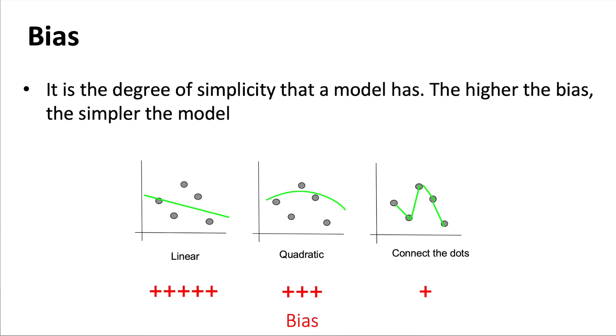So what is bias? The concept of bias is related to the degree of simplicity that a model has. The higher the bias, the simpler the model. So here we can see that the linear model has the biggest bias among these three alternatives.